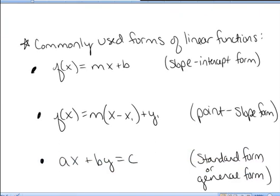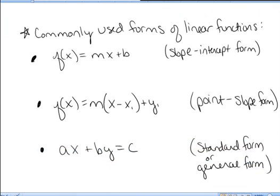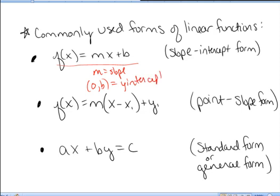There are three commonly used forms of linear functions. The first one we've already looked at: f of x equals mx plus b, where m is the slope and (0, b) is the y-intercept. Because this form gives you both the slope and the y-intercept, we call it the slope-intercept form of a line.